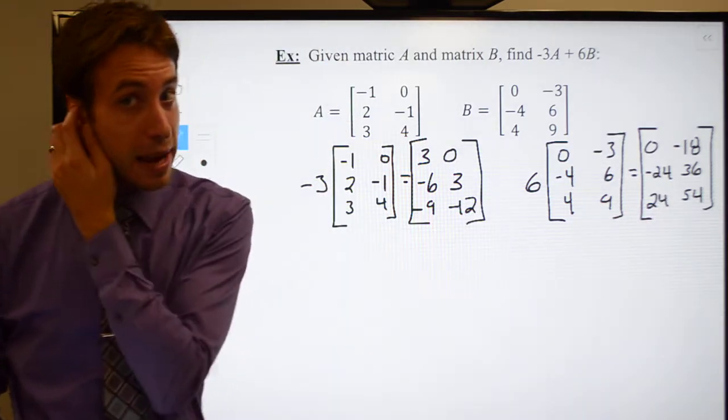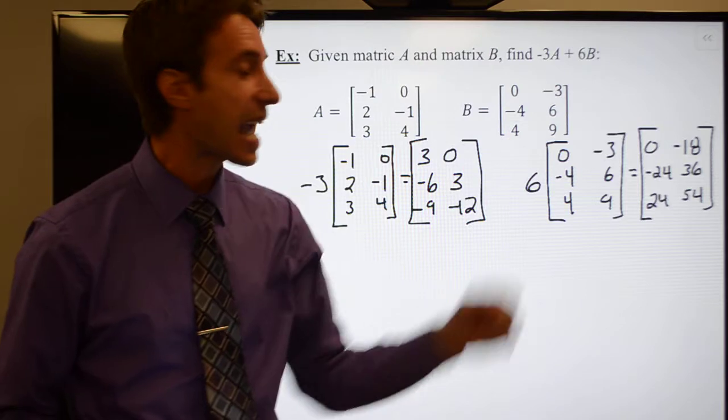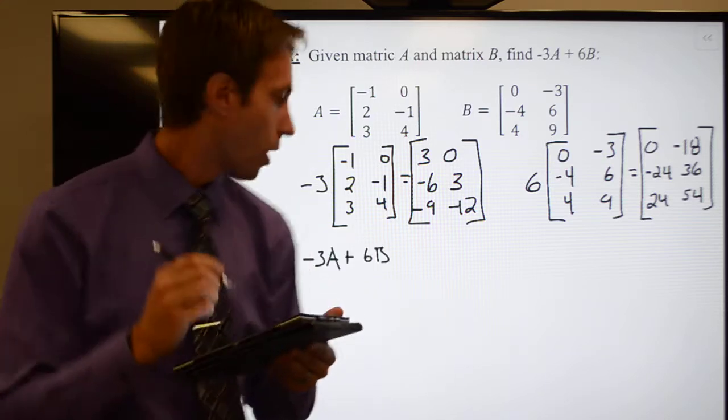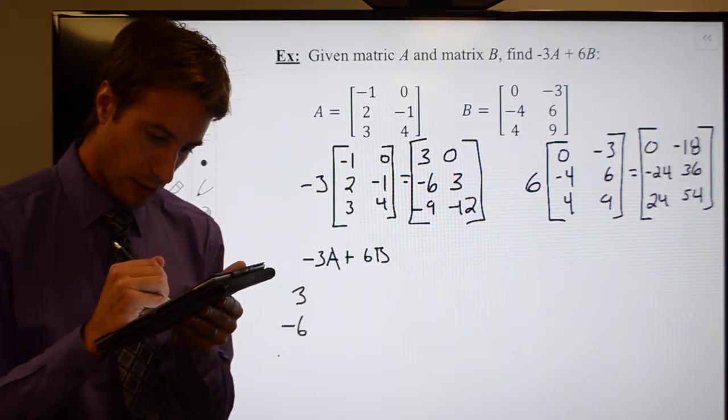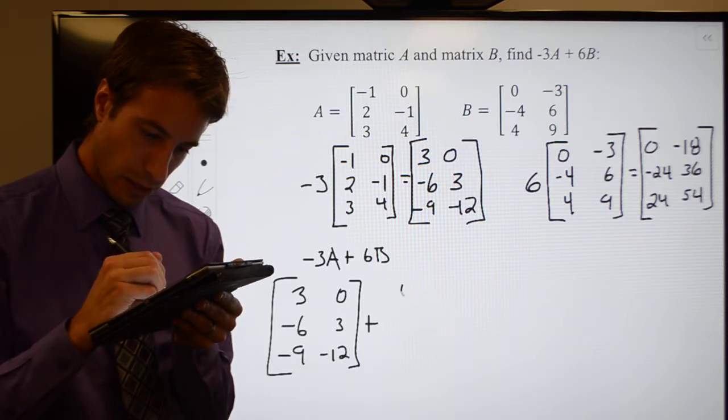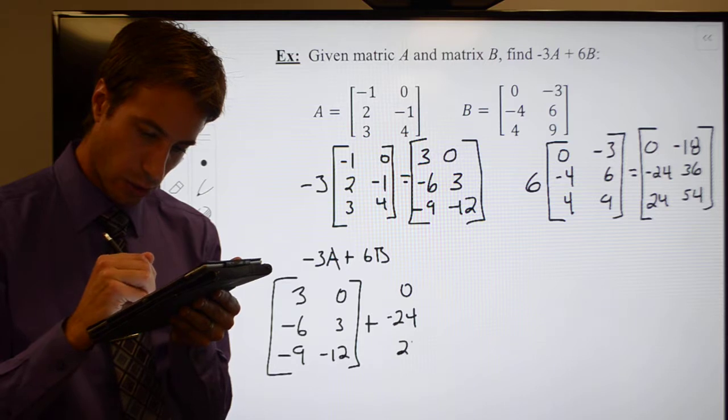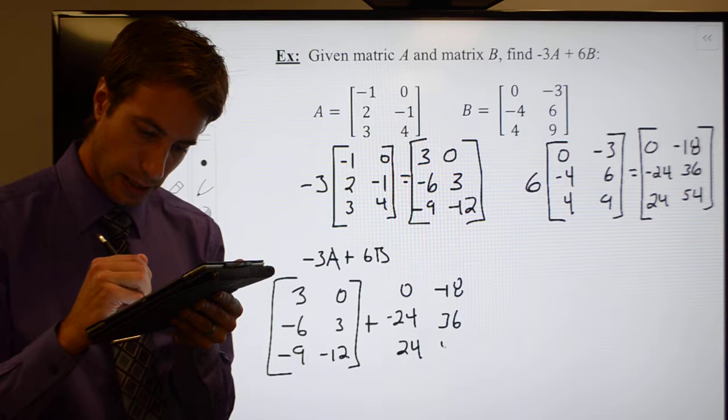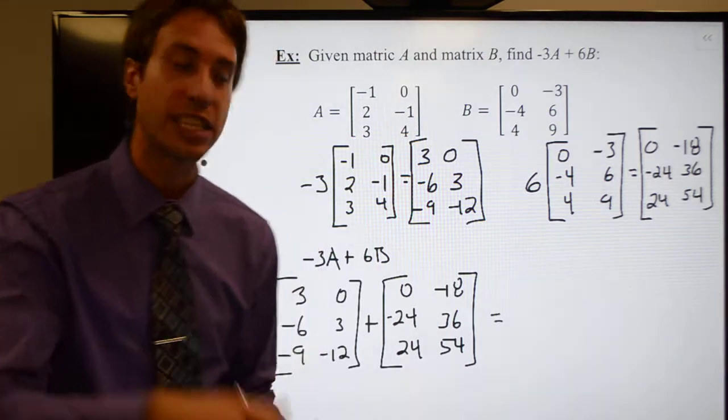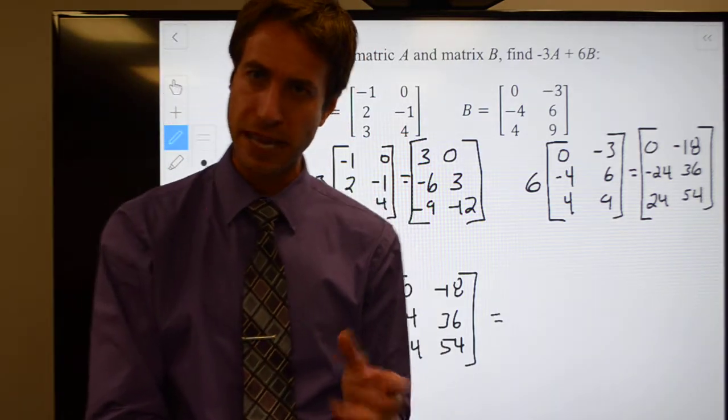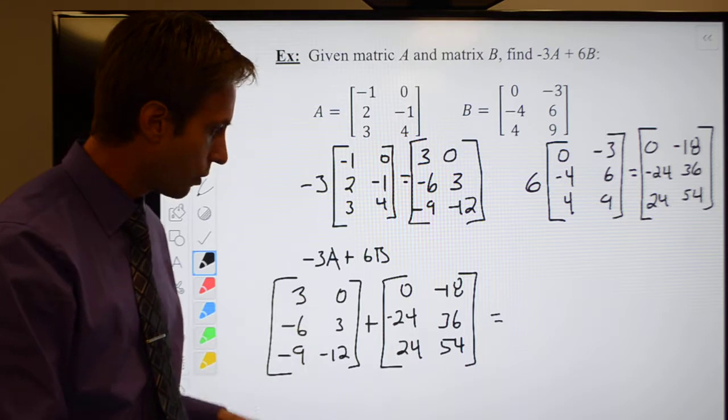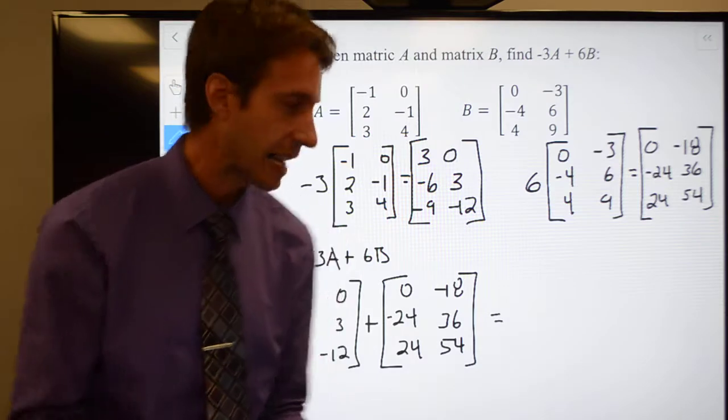Now what they ask you to do is add those matrices together. So -3A plus 6B. Here's what they want you to do. You have [3, 0; -6, 3; -9, -12] and you want to add that to [0, -18; -24, 36; 24, 54]. Before I do addition, I have to make sure it is defined, which means the dimensions must be the same. This one is 3 by 2, rows by columns. This one is also 3 by 2. The dimensions are the same, so I can add these together.